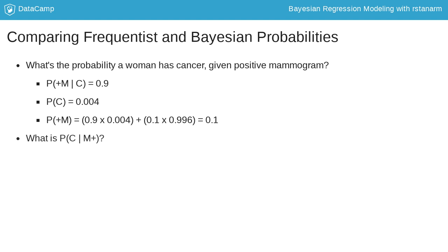So, given a positive mammogram, what are the chances that the woman has cancer? Only 3.6%. This is very different from the 90% and illustrates the importance of making inferences about the parameter we are interested in — the probability of cancer — rather than the data, the probability of a positive mammogram. In this course, we'll apply these Bayesian methods to regression to make better inferences about model parameters.